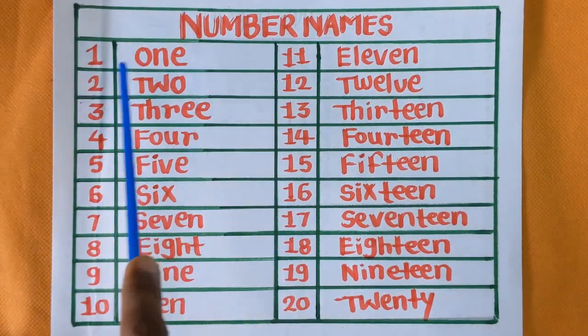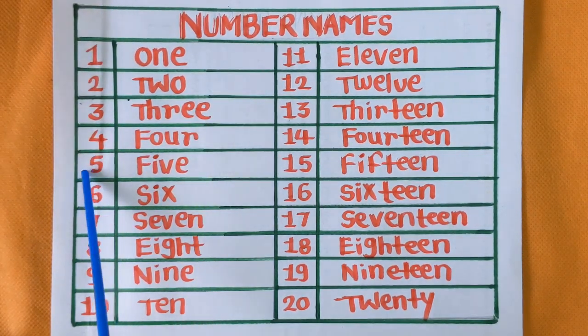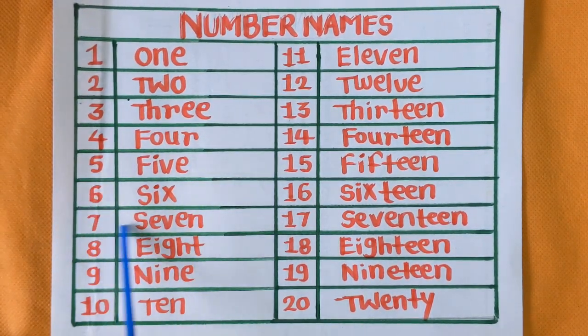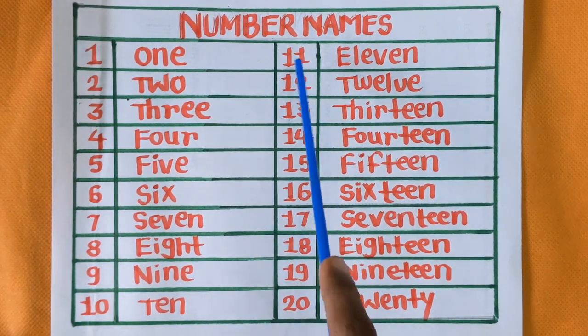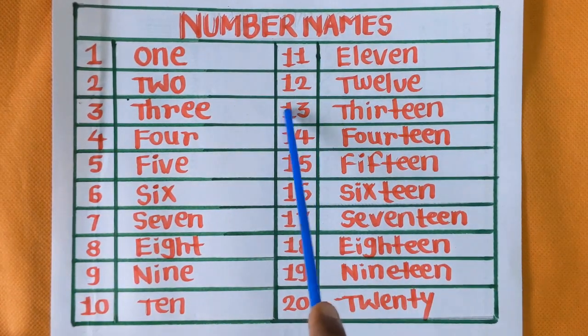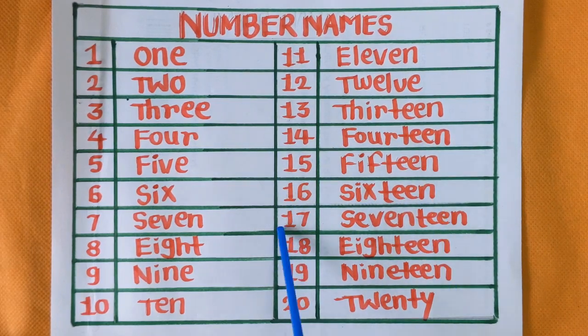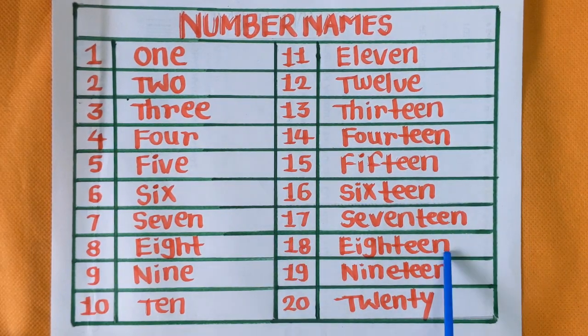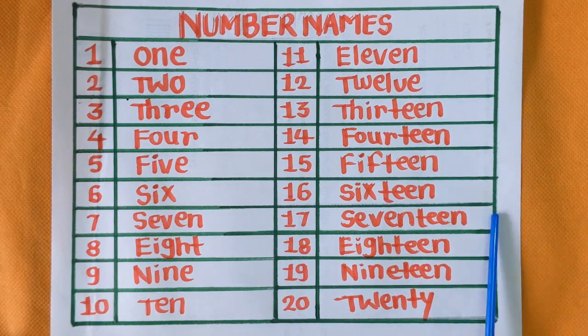This is number one, number two, number three, four, five, six, seven, eight, nine, ten, eleven, twelve, thirteen, fourteen, fifteen, sixteen, seventeen, eighteen, nineteen, and twenty. Yay! We have done it! Good job!